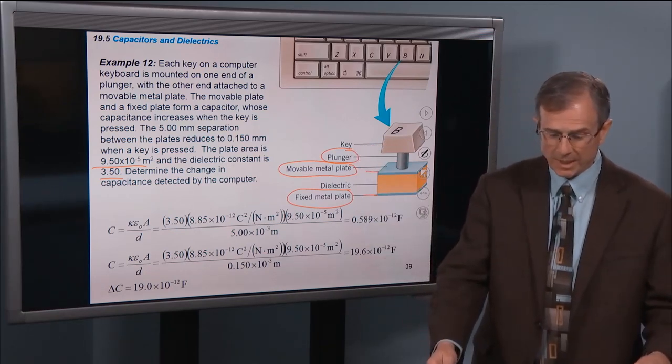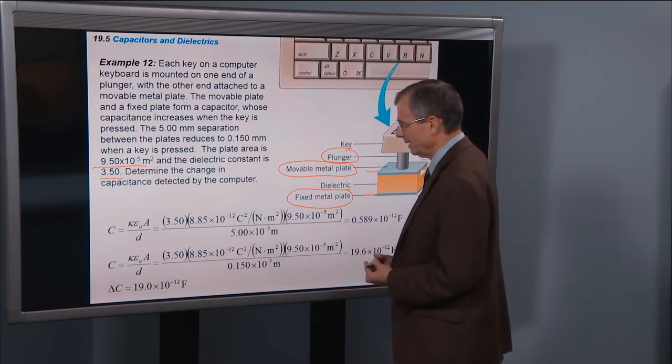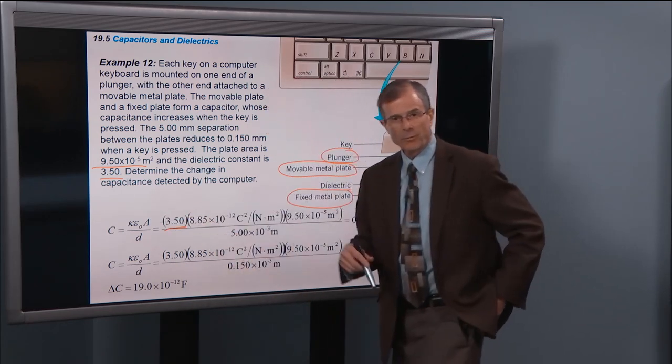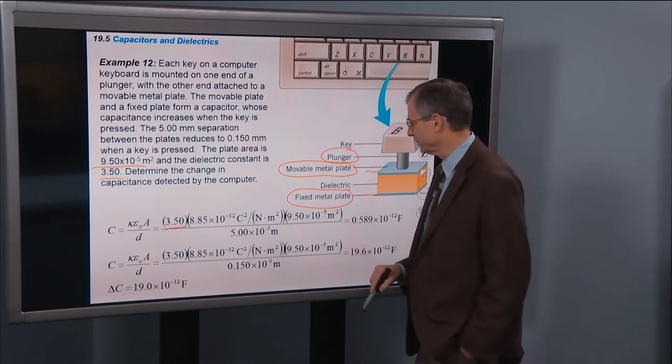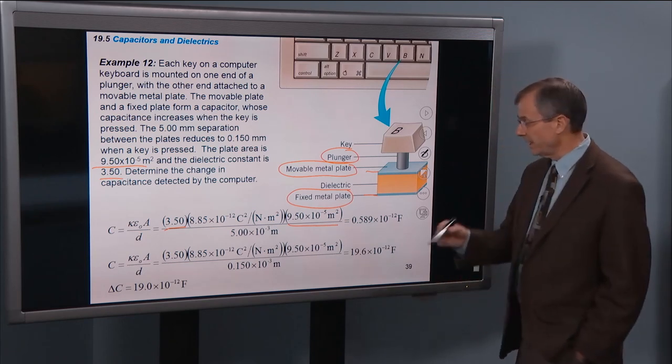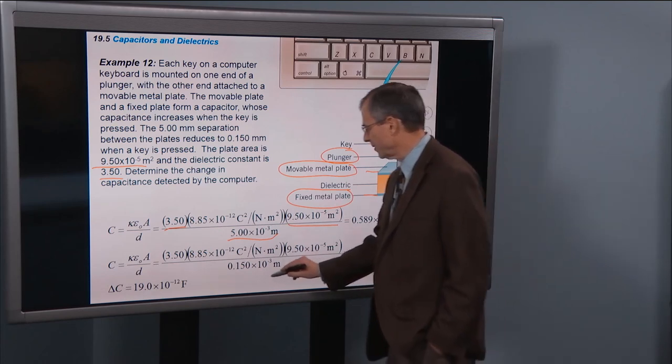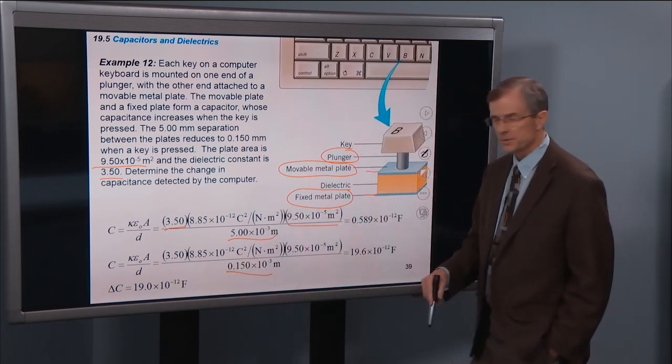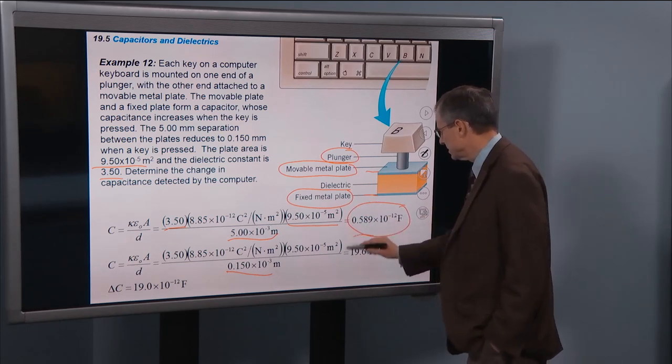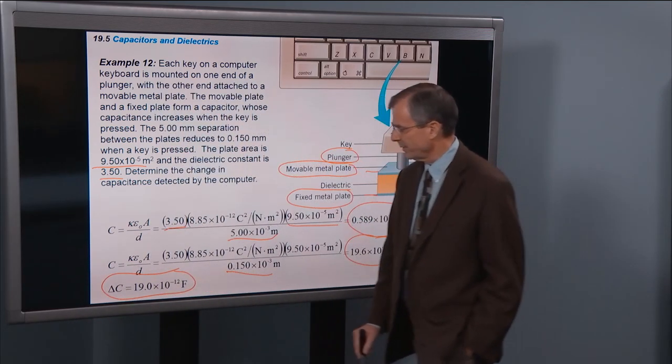We can work it out, it's very easy. The dielectric constant is 3.5. ε₀ is 1 over 4πk, which is 8.85 times 10 to the minus 12. And then the cross-sectional area is given. This is the initial distance between the plates, and this is the final. The only thing that's different between these two calculations is the distance between the two plates. And so that gives two different capacitances, with the difference between them being 19 times 10 to the minus 12 farads.